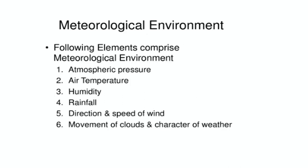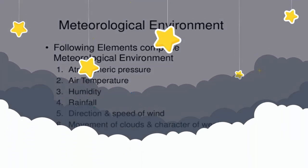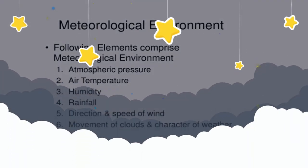Meteorological environment comprises a few elements which are listed here. First is atmospheric pressure, air temperature, humidity, rainfall, direction and speed of wind, movement of clouds, and character of weather.